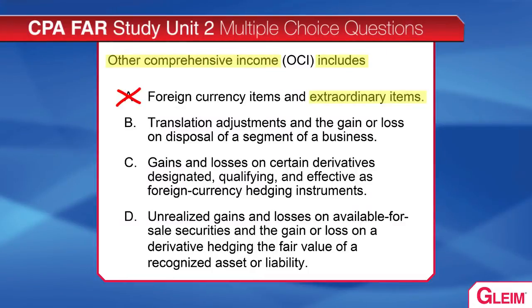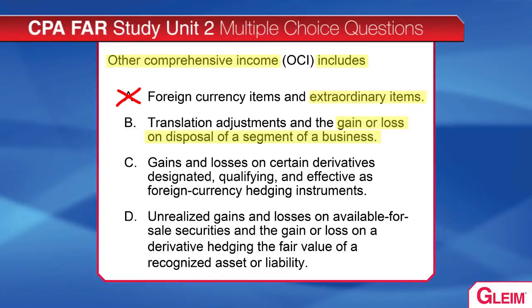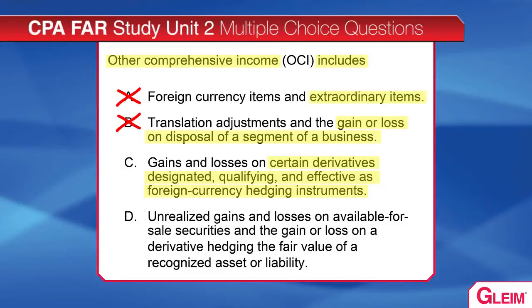Answer choice B says translation adjustments and the gain or loss on disposal of a segment of a business. Translation adjustments is a good one, but gain or loss on disposal is discontinued operations — that goes right before extraordinary items on the income statement, not in OCI. Eliminate B. Now look at choice C: gains and losses on certain derivatives designated, qualifying, and effective as foreign currency hedging instruments. Think about whether these are in the income statement or in OCI — and they appear to belong in OCI. That looks correct.